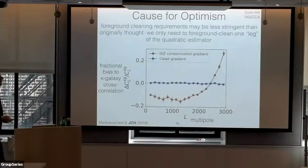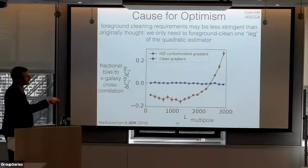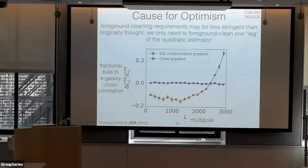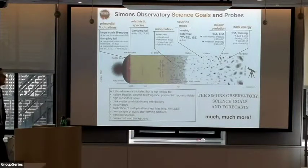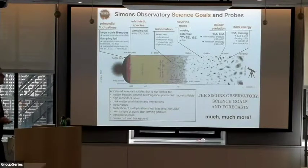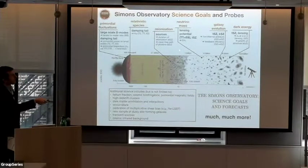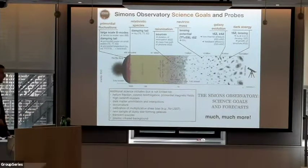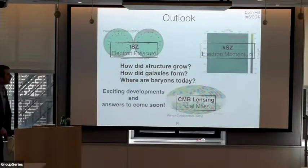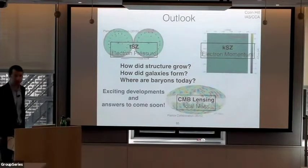Just to wrap up: I'm excited about the whole range of science that SO is going to do. I'm very much interested in the growth-of-structure constraints from lensing, as well as constraints on galaxy formation and evolution from the SZ signals, which I think are going to probe a totally uncharted range of observational parameter space. I'll leave you with these three questions and three probes, and I'm happy to take any questions.